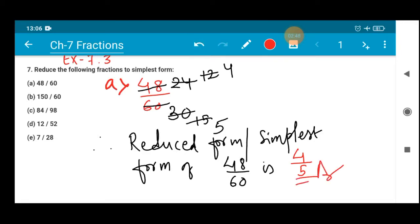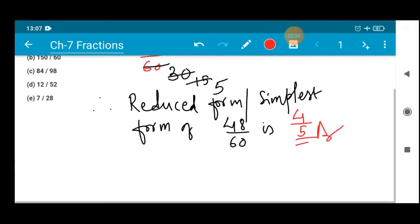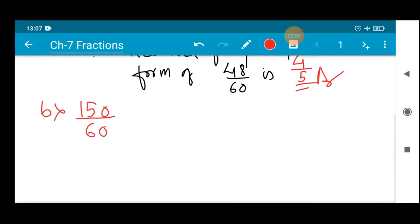Let's head forward to the next one. 150 by 60, very easy. We can have a cut of 0 because in both the numerator and denominator there is 0. So we can cut that. Now more can be reduced. Just see, 3 twos are 6, 3 fives are 15. So we have got the answer, that is 5 by 2.